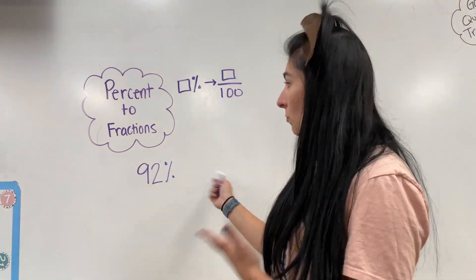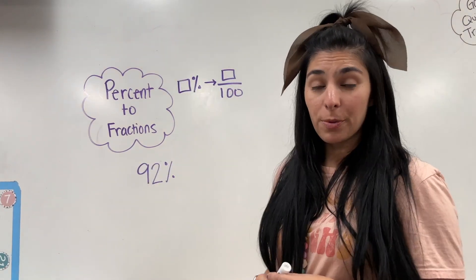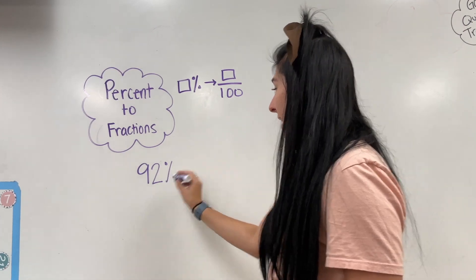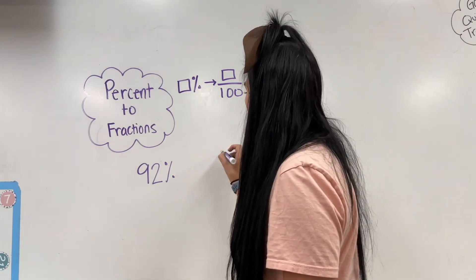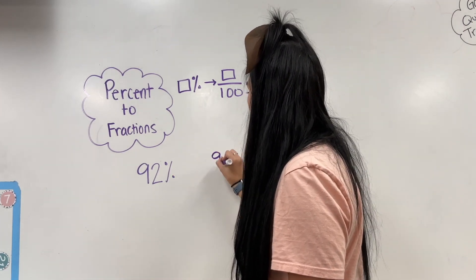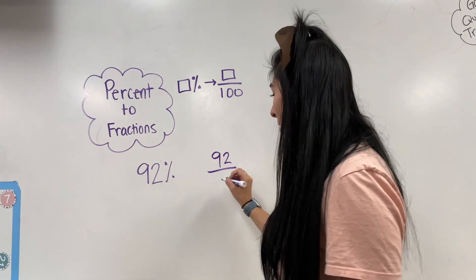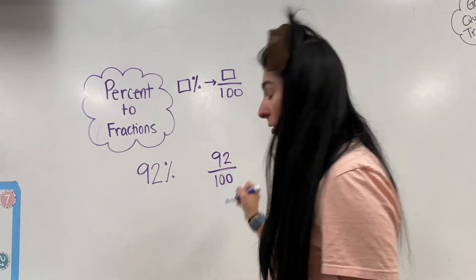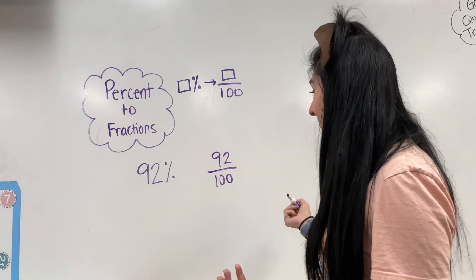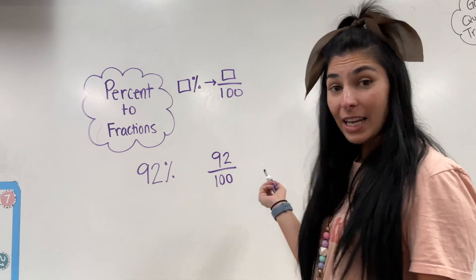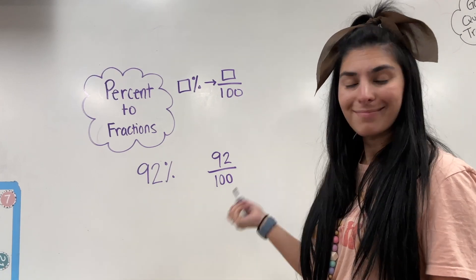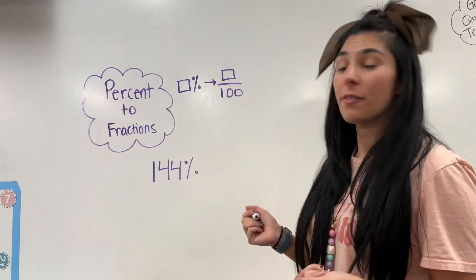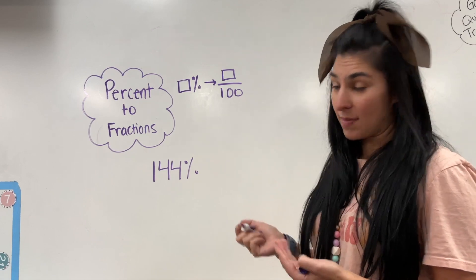Let's start off simple. I have 92% that I want to convert into a fraction. I take that 92 and make it my numerator, and put it over 100. All percents are over 100 — that's it. So 92% = 92/100.